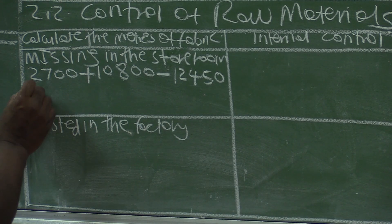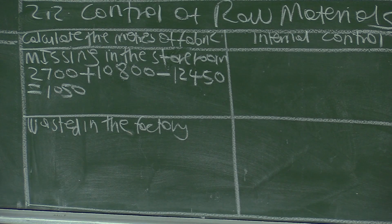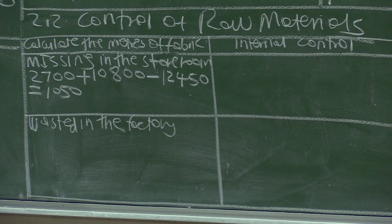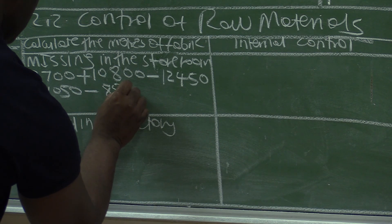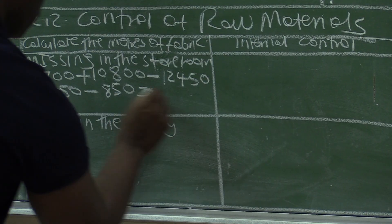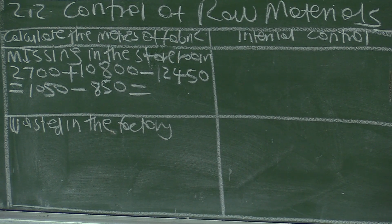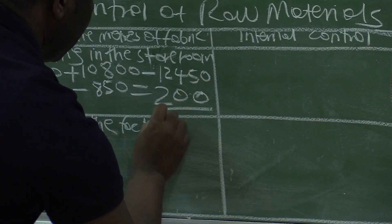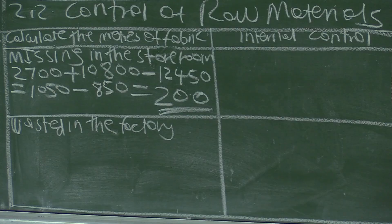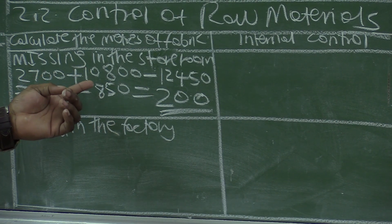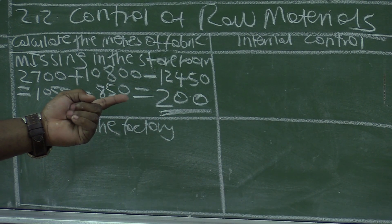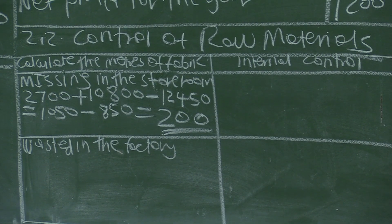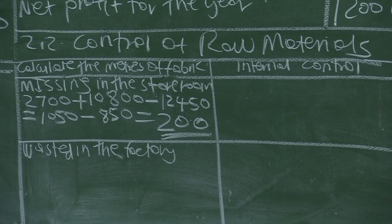We are supposed to be left with 1,050 meters. But according to the closing balance on 28 February 2021, we are only left with 850 meters. So 1,050 minus 850 equals 200. There are 200 meters missing. We had 2,700, bought 10,800, used 12,450, so we should have 1,050. But the closing balance shows only 850 — so 200 meters are missing.